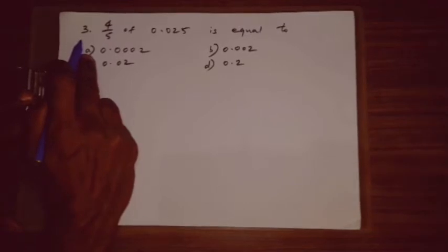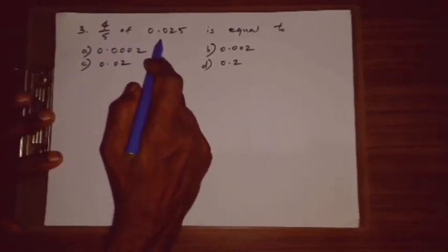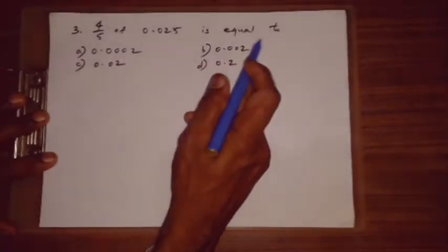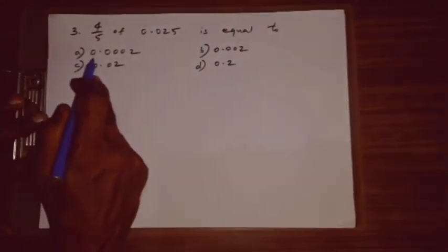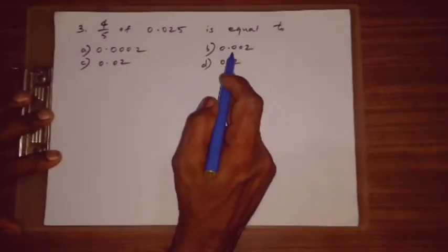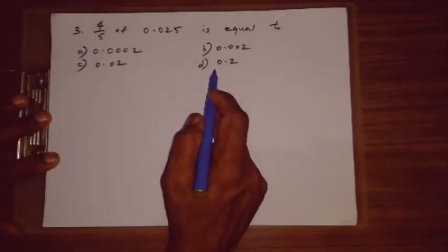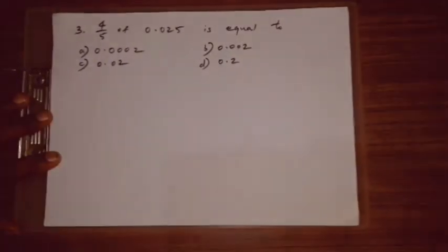Question number 3. 4 by 5 of 0.025 is equal to A. 0.0002. B. 0.002. C. 0.02. D. 0.2. How to find.